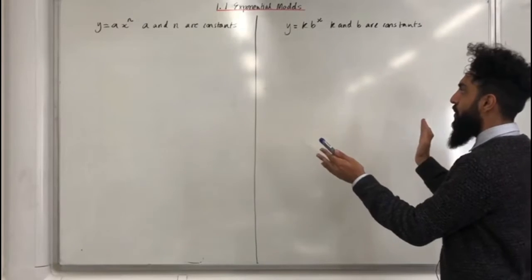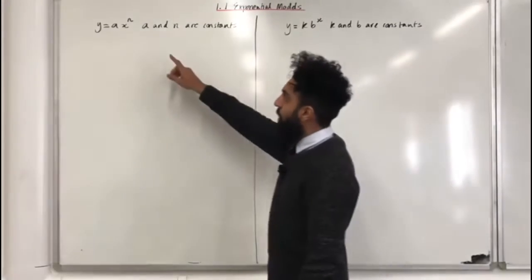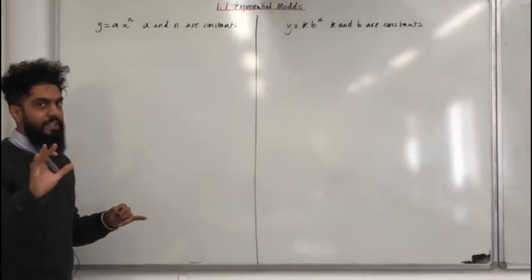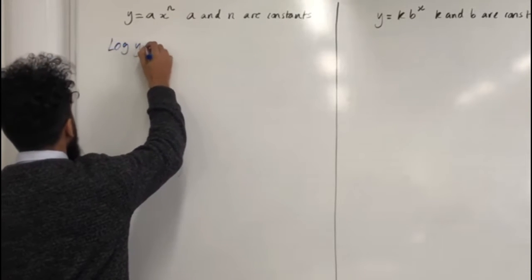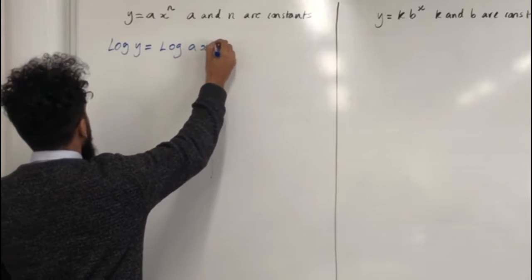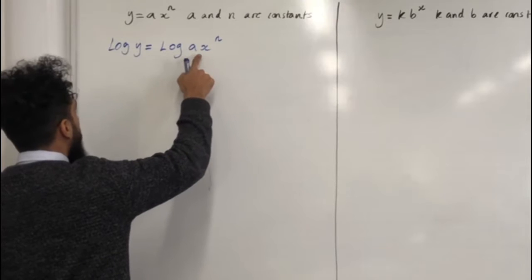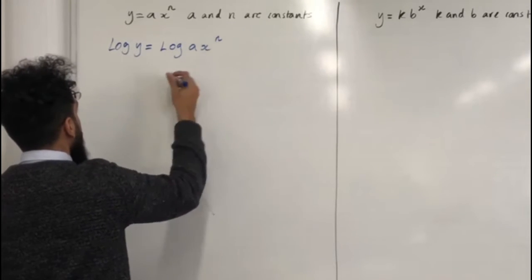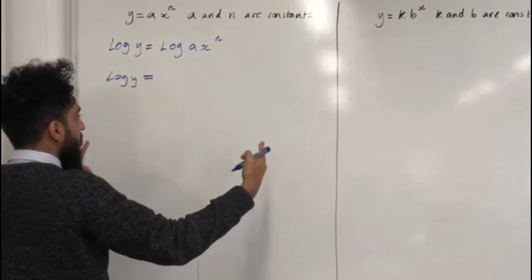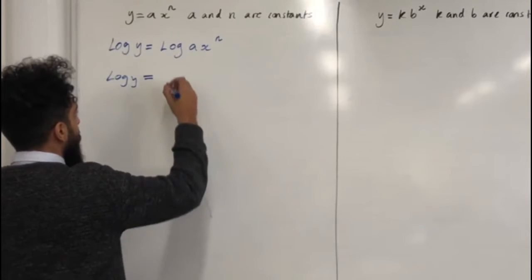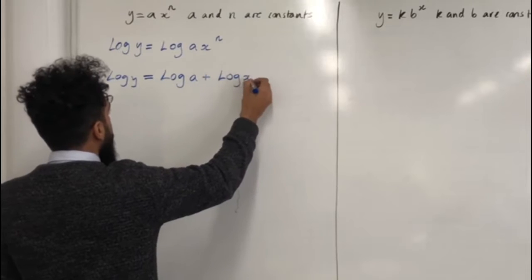I'll be taking these two models and transforming them into a linear model, starting off with the first model. The very first step is to apply logs on both sides. So I've got log y is equal to log ax to the power n. Now ax to the power n is equivalent to writing a multiplied by x to the power n. So what we can do is split this log into two parts using the multiplication rule for logs — I can write log a plus log x to the power n.